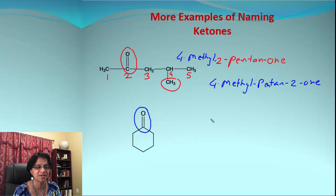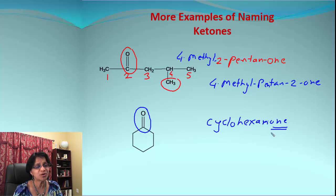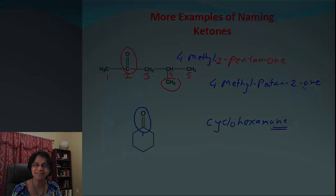In the last example, we have a six-membered carbon ring — cyclohexane — as the parent name, with a ketone group. So we say cyclohexanone, adding 'one' at the end. We don't need to write position one here because if there's only one ketone on a cyclic ring it's obviously at number one. I hope you enjoyed the video — see you in the next one, bye bye!